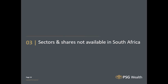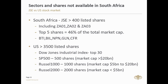Moving to the second point: shares and sectors not available in South Africa. The JSE has just over 400 listed shares across three categories — ZO1, ZO2, ZO3 — with ZO3 being very illiquid and untradeable. Only about 300 shares are really investable in South Africa, and notably just 5 shares make up 46% of the total market cap: British American Tobacco, BHP Billiton, Naspers, Glencore, and Richemont. Compare that to the US with over 3,500 shares. The Dow Jones Industrial Index is a price-weighted average of 30 significant stocks traded on the NYSE and NASDAQ, founded in 1896 by Charles Dow and Edward Jones.